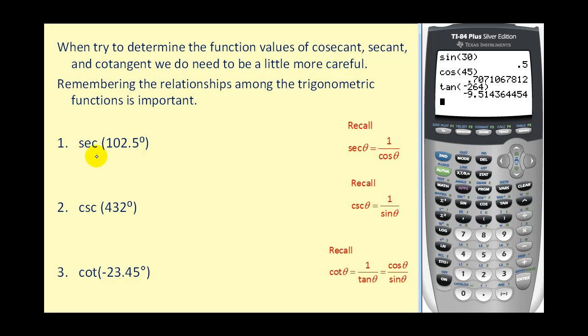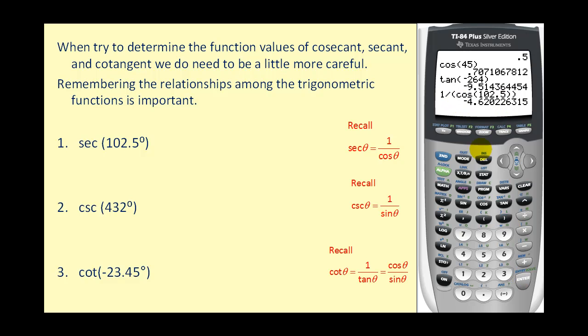For example, if we want to find the secant of 102.5 degrees, there is no secant key on the calculator. However, there's a couple ways of doing this. Remember that secant theta equals one over cosine theta, for they are reciprocals of one another. So using this relationship, we could find the secant of 102.5 degrees as one divided by cosine of 102.5 degrees. Notice we close the parentheses here and then we also need to close it again for the denominator. Press enter, and there's our approximate value: negative 4.6202.